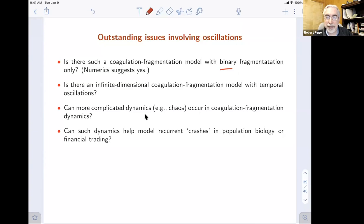There's some applications in which one might expect recurrent crashes in population biology or fragmentation in financial trading problems where groups coalesce and fragment. Maybe these kinds of models can be of some relevance there. That's where I'm going to leave it. Thanks very much for your attention.